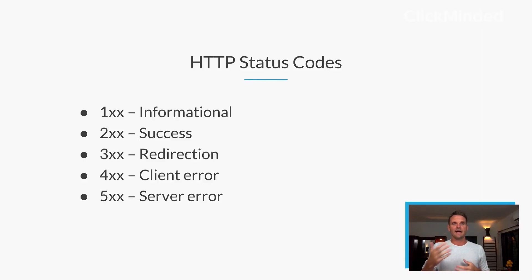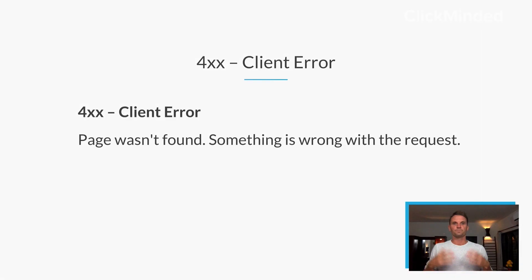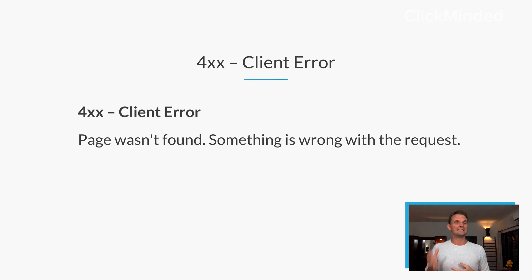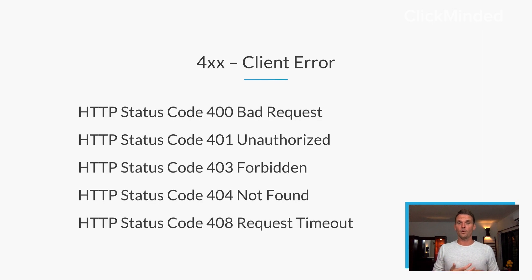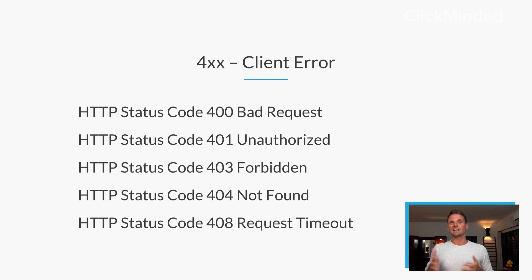Let's jump into each one. The 100 block — these are informational requests. The 200 block — those are successful requests. The 300 block is for redirects. The 400 block is for client errors, and the 500 block is for server errors. The 400 block means the page wasn't found or something is wrong with the request — whatever is happening on the client side is the issue. A 400 might be a bad request, a 401 unauthorized, a 403 forbidden. Any status code that comes in as a 400 is a client error.